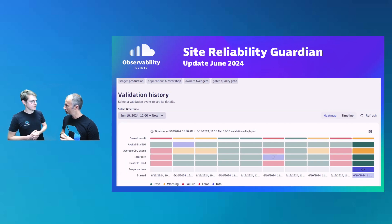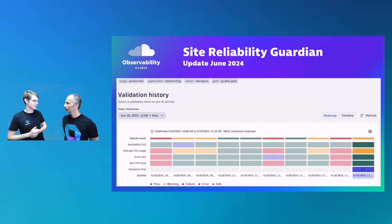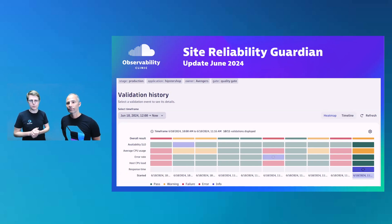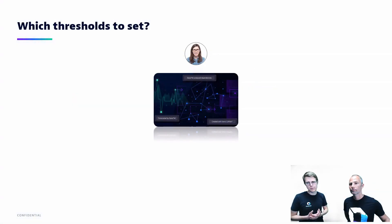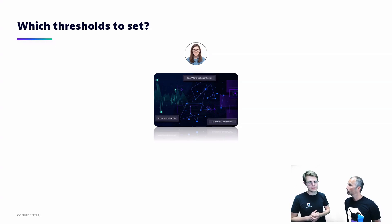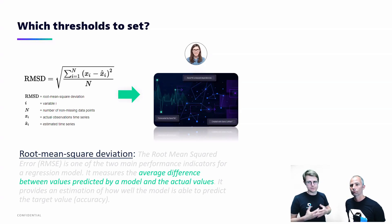I will explain what we have built. We in Dynatrace also see the need to adopt and use the Site Reliability Guardian ourselves, and this was discovered by our data science team. They are using the Site Reliability Guardian to validate the models they use for Davis AI. They improve the model, fine-tune it, and at the end check whether forecasting capabilities are as stable as before. For that they use metrics like the root mean square deviation, a data science metric to validate the performance of models.